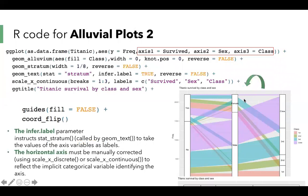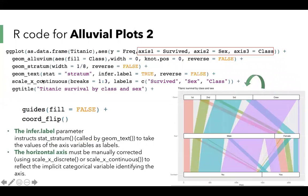The geom_text has the same function as geom_label. Geom_text adds text directly to the plot. Geom_label draws a rectangle behind the text, making it easier to read. The infer label parameter instructs the stat_stratum to take the values of the axis variables as labels. The horizontal axis must be manually corrected to reflect the impact of categorical variables identifying the axis.